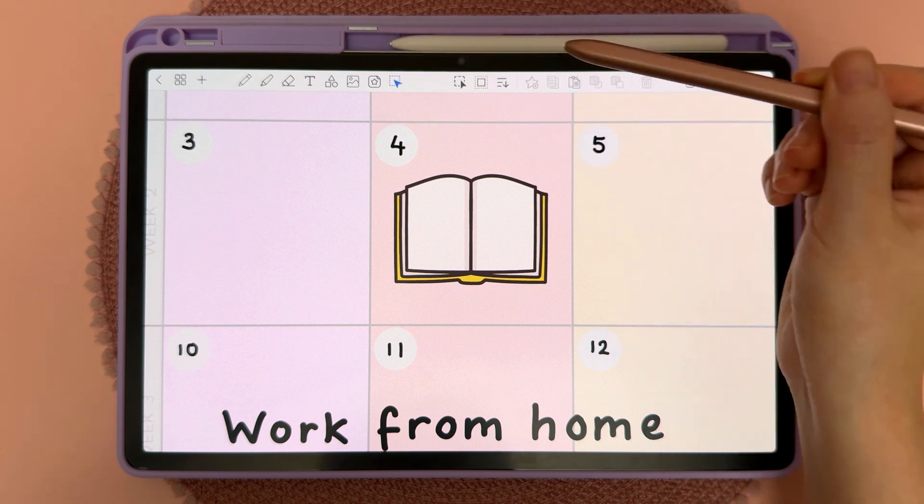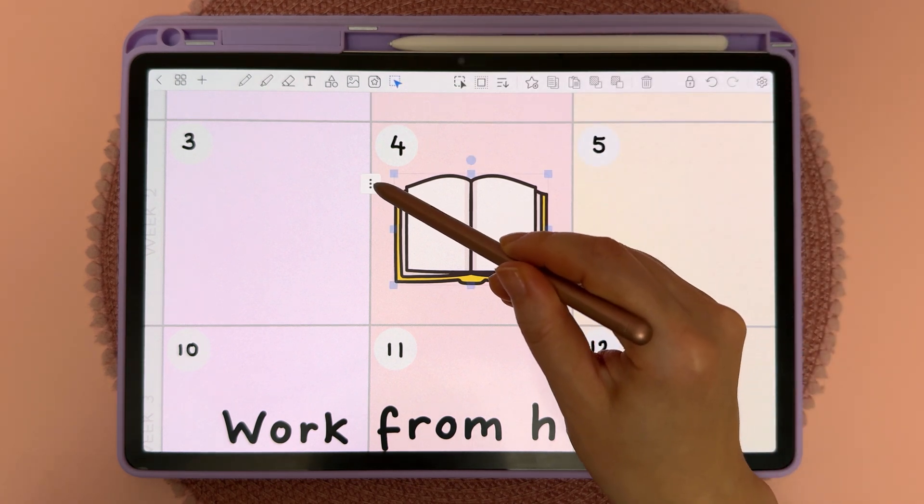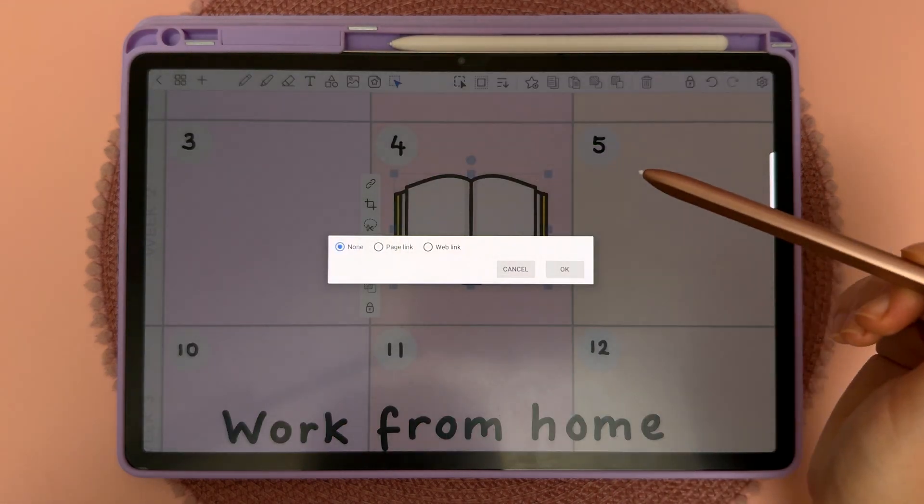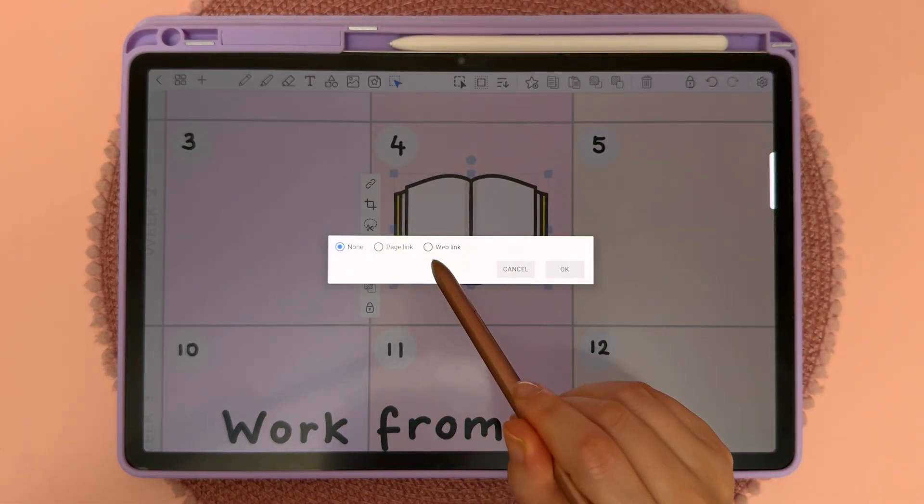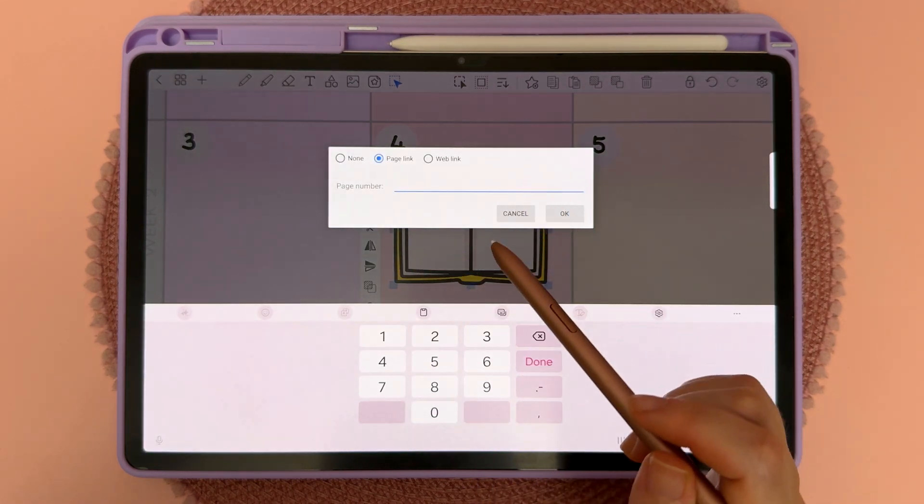Then tap on the three dots next to it and then tap on this link icon. Because I want to create a page link, I'm going to tap on page link, but you can also create web links. Then you can just enter in your page number.